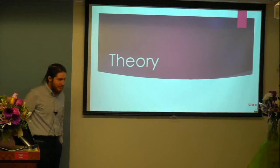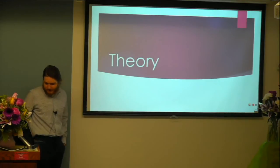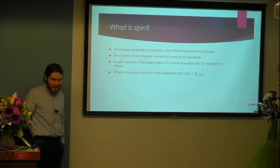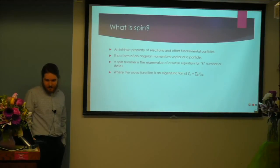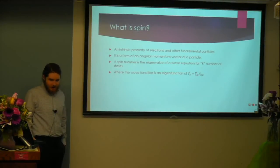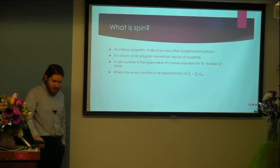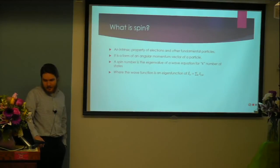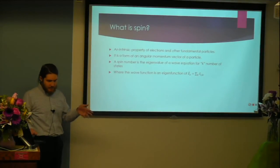We'll have to cover some theory since mine is very different from everyone else's. What exactly is spin? It's an intrinsic property of electrons and other fundamental particles — a form of angular momentum of a particle. The analogy is a ball that's spinning, except it's not a ball and it's not spinning. Specifically, the spin number of an electron is the eigenvalue of a wave equation for k number of states, where the wave function is an eigenfunction of S-hat-z for the summation of k terms of S-hat-z-k. That would be the z value for a vector of magnetization.